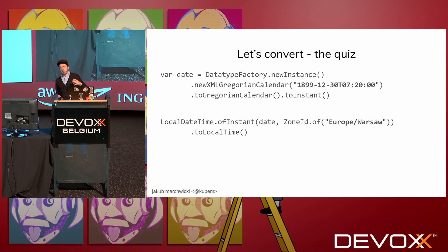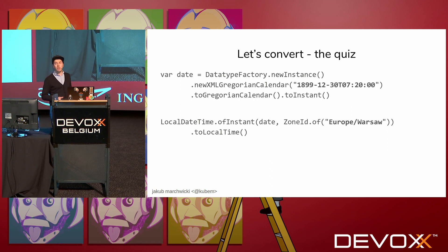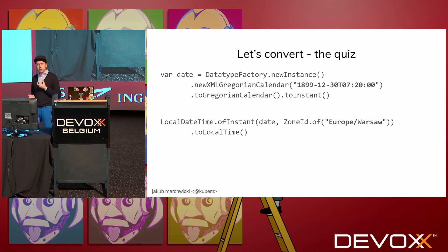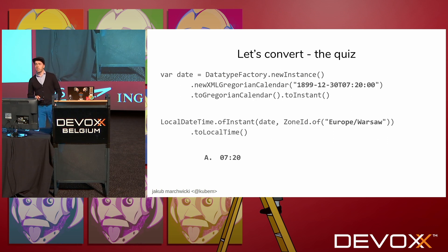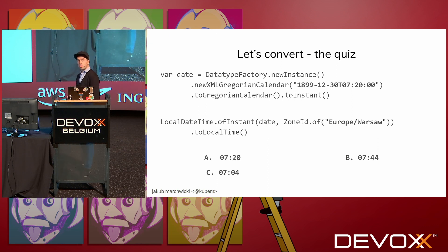Fair enough. But I would like to get a local time, so I'm converting further. I take LocalTime out of Instant — I have to tell the time zone, because I don't have a time zone in my string representation — and I have a local time. That makes perfect sense if I'd like to get the time of my bus. So another question to you: what will be the output of this line? Will it be 7:20? Will it be 7:44? Will it be 7:04? Or will it be 6:20?